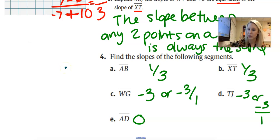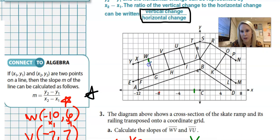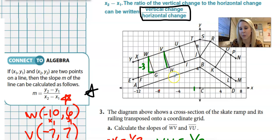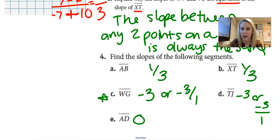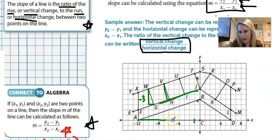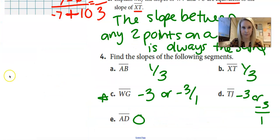So your answers for AB, you should have gotten one-third or any equivalent ratio. So you could have had like two-sixths, et cetera, but just make sure you simplify it. For WG and TJ, you should have had negative three, or you could say negative three over one. And then for AD, you should have gotten zero. Let me explain WG, for example. So WG, they went down. And so if you're going down, that would be a negative three, and then they went over one. So the rise is negative. So negative three over one. So if your line is going down, slope is negative. Line is going up, it is positive. And then AD was a horizontal line. We know the slope of those are zero. If you've got a vertical line, that slope would be undefined.